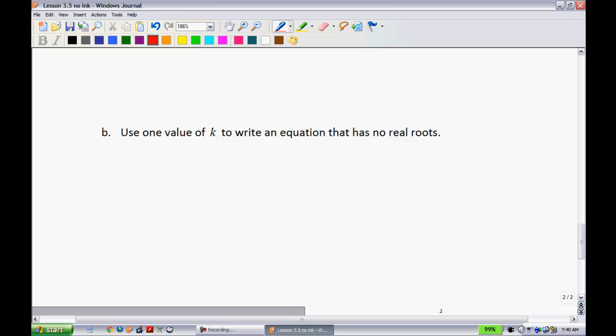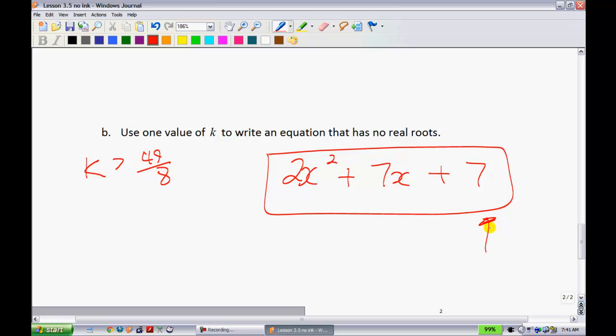So next thing it says, use one value of k to write an equation that has no real roots. Well, since we just found out that it has to be greater than 49 over 8, remember that k must have been greater than 49 over 8. Well, 49 over 8 is approximately 6. So I'm going to pick something that's a little bit bigger than 6. We could, for instance, pick 2x squared plus 7x plus 7. That would be one example. Note that there are infinite solutions that you could pick for something like this.